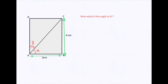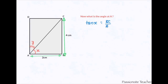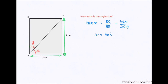To find the correct angle in the given rectangle at A, we use tan x, which equals opposite side over adjacent side — that is BC over AC, which equals 4 cm over 2 cm. With simple math, x equals tan inverse of 2, which gives x equal to 63.43 degrees.